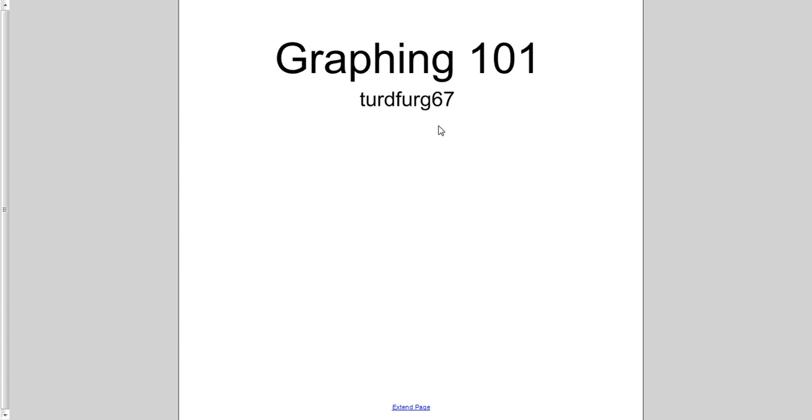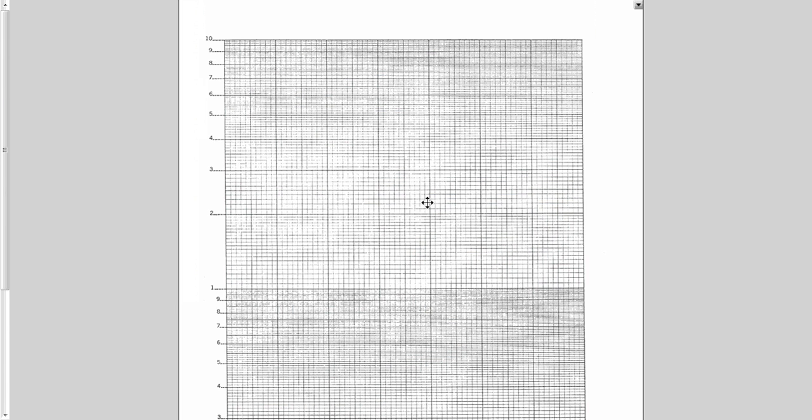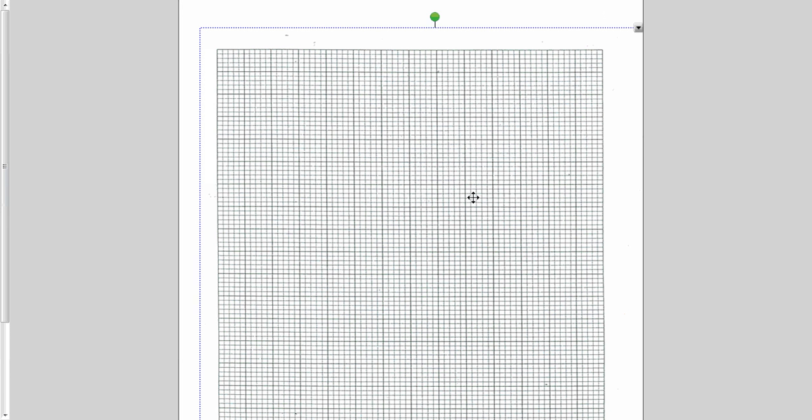Welcome back to the Turdford channel. Today's video is a graphing tutorial where we're going to do several different types of graphs. This video will focus on doing a linear graph with normal graph paper. We'll also do separate videos on semi-log paper — this is two-cycle semi-log paper — and log-log paper. But right now let's go straight into what a linear graph should look like. I've got a sample of data here.